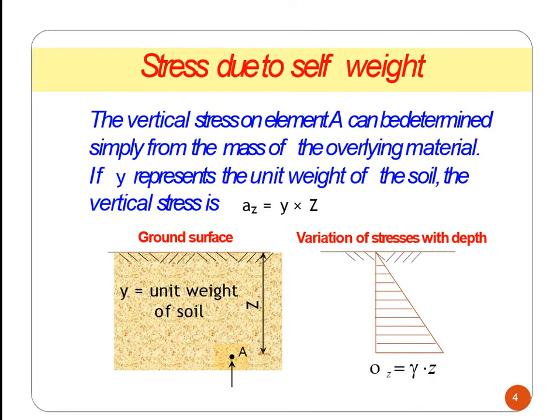We are going to measure some of the vertical stress. We have two types of stress components: vertical stress and horizontal stress. Vertical stress is simply related to the mass. If we have a mass, we place a load on it. The mass produces a weight, and the mass is related to the weight.